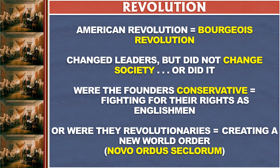The Declaration of Independence, when it talks about life, liberty, and the pursuit of happiness, called these natural rights — God-given rights. They were creating a new world order. You see this on American currency, on the back of the dollar bill, where in Latin 'novus ordo seclorum' means 'new world order.' This idea was that they were creating a new society grounded on a new understanding of human relationships, not on traditional rights as Englishmen.